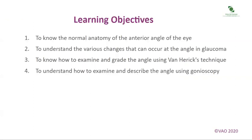The learning objectives for this module are: 1. To know the normal anatomy of the anterior angle of the eye. 2. To understand the various changes that can occur at the angle in glaucoma. 3. To know how to examine and grade the angle using Van Herrick's technique. 4. To understand how to examine and describe the angle using gonioscopy.